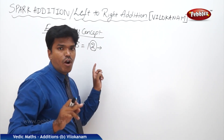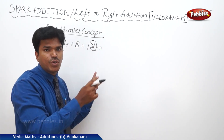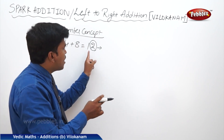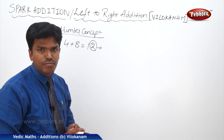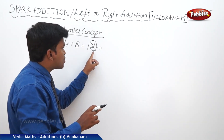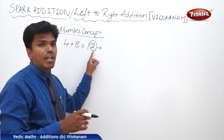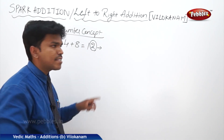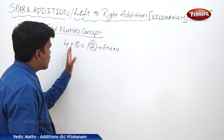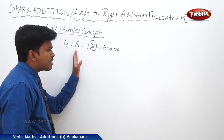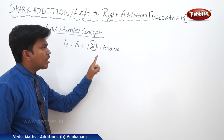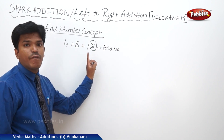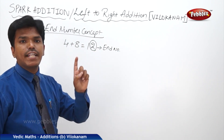Whenever you add any two digits and get a double-digit number, the rightmost digit — the ones place digit — is called the end number. So for 4 plus 8 equals 12, the digit 2 is the end number.